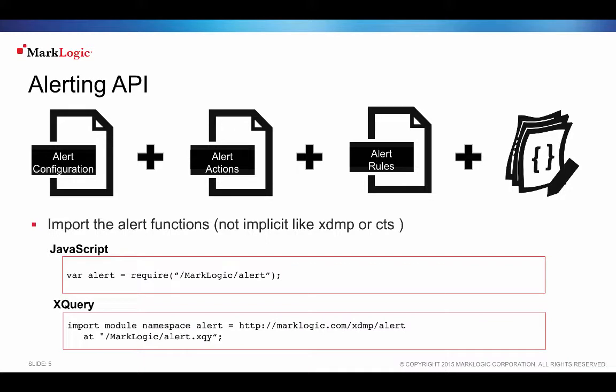Alerting applications require a valid alerting license key. Alerting applications are built using reverse queries. The license key is required to use the reverse index and to use the alerting API.